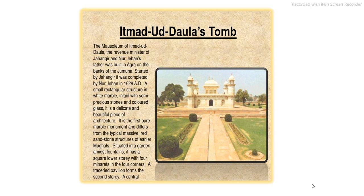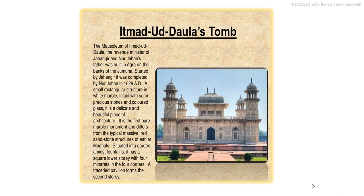This is Itmad-ud-Daula's Tomb. The mausoleum of Itmad-ud-Daula, who was the revenue minister of Jahangir and Nur Jahan's father, was built in Agra on the banks of River Yamuna. Started by Jahangir, it was completed by Nur Jahan in 1628. A small rectangular structure in white marble inlaid with semi-precious stones and colored glass, the tomb of Itmad-ud-Daula is a delicate and beautiful piece of architecture. It is the first pure marble monument and differs from the typical massive red sandstone structures of earlier Mughals. Situated in a garden amidst fountains, it has a square lower story with four minarets in the four corners, and a treasury pavilion forms the second story.